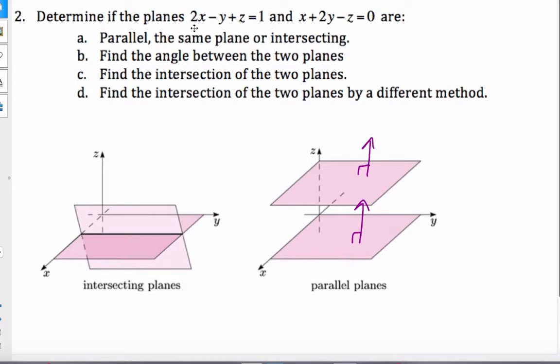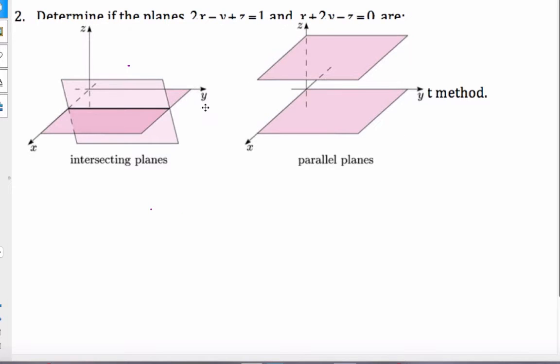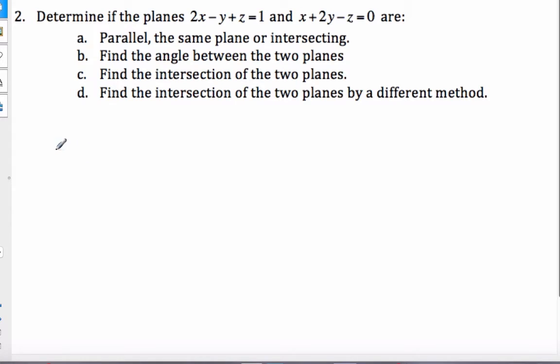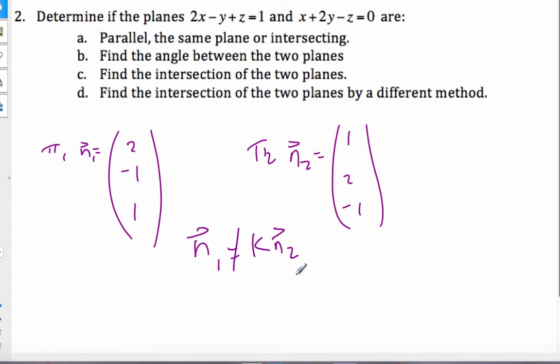So if I want to check out these planes, I'm going to find their normal vectors. For plane one, the normal one is equal to 2, -1, 1. For plane two, the normal is 1, 2, -1. It is clear to see that normal one does not equal any multiple of normal two. Therefore they are not parallel, not the same plane. The only thing they could be is intersecting.